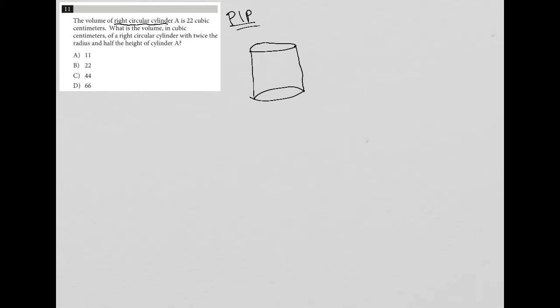Don't worry about your drawing being perfect. What do I know about this right circular cylinder? I know it has a volume, so V equals 22. What is the volume of a right circular cylinder? The volume formula is πr²h, so πr²h equals 22.